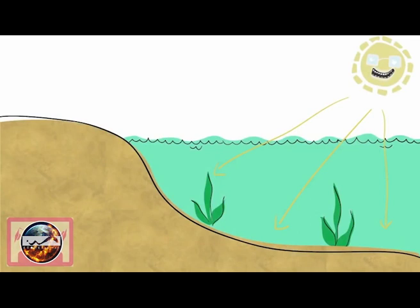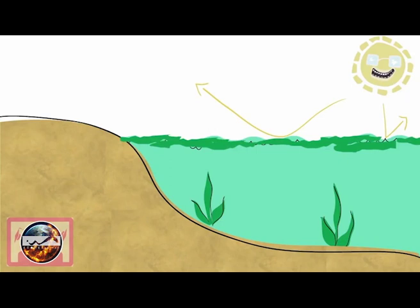This algal bloom will absorb sunlight shining on the water, so the sunlight can't reach the bottom. Plants who need this light to photosynthesize will die.